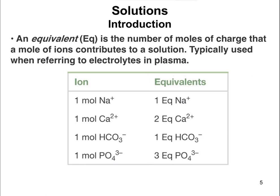When talking about electrolytes specifically — when you have ions in a solution — we often refer to these as equivalents, particularly when talking about plasma, so this is a health-related topic. An equivalent is the number of moles of charge that ions contribute to a solution. The way this works: you take the number of moles times the absolute value of the charge, and that equals the equivalents.